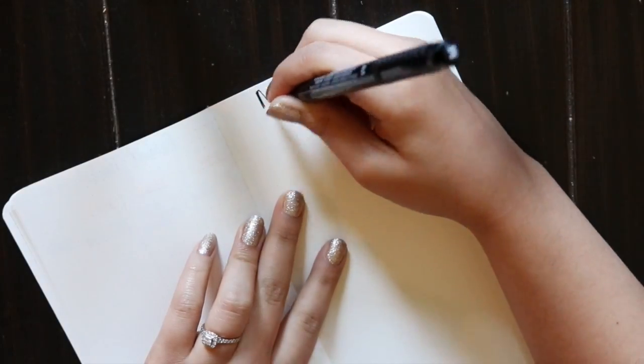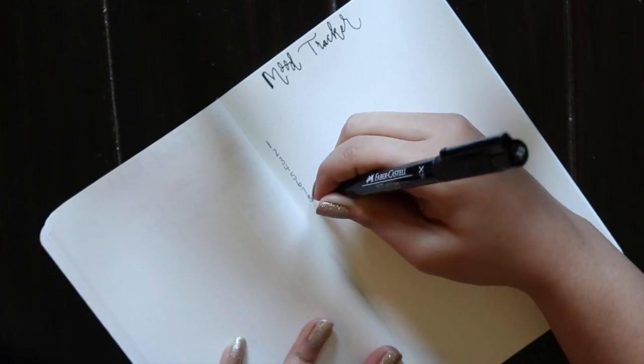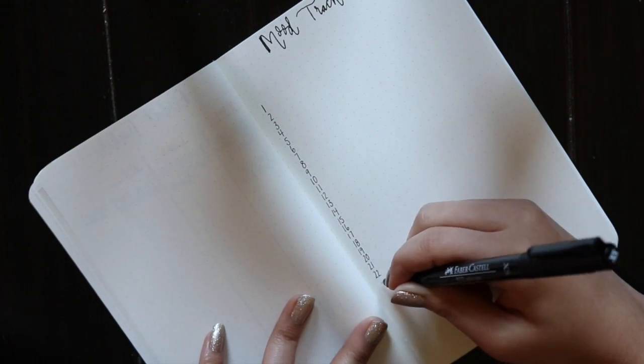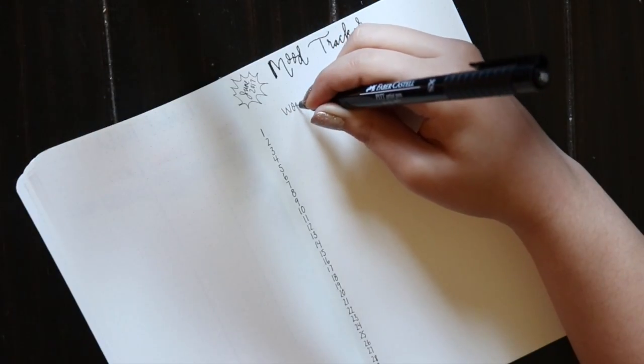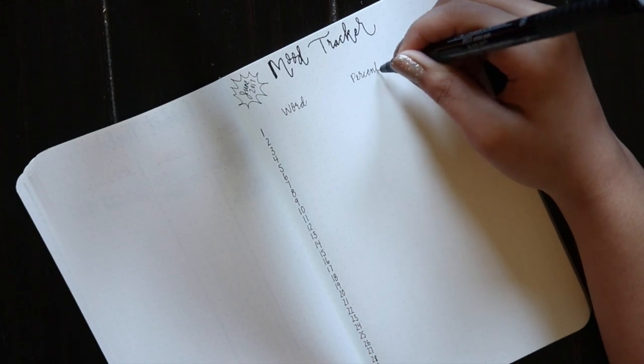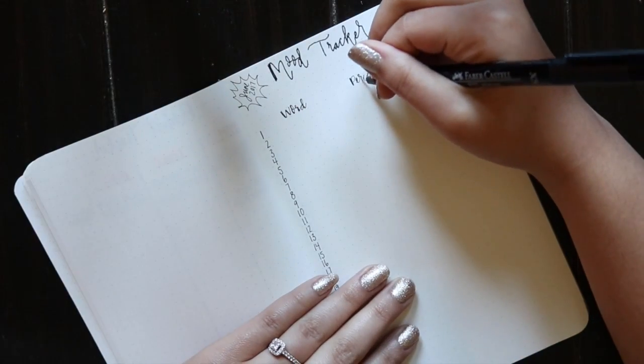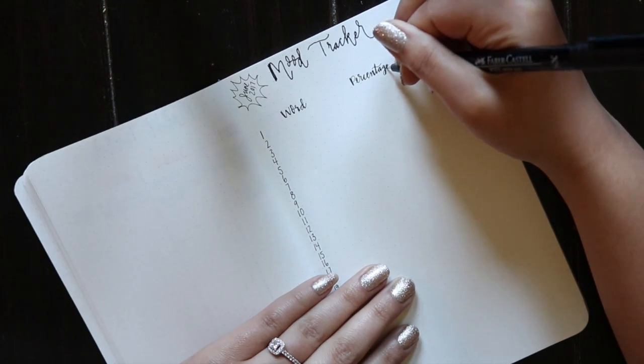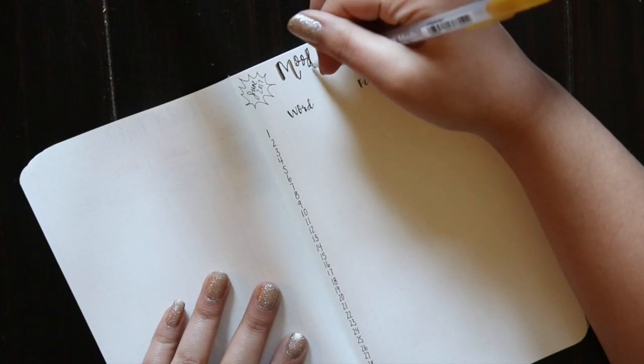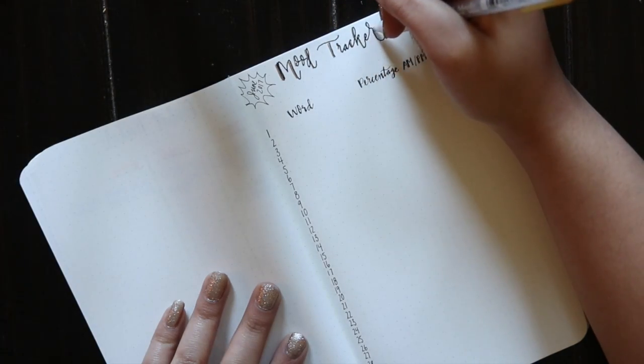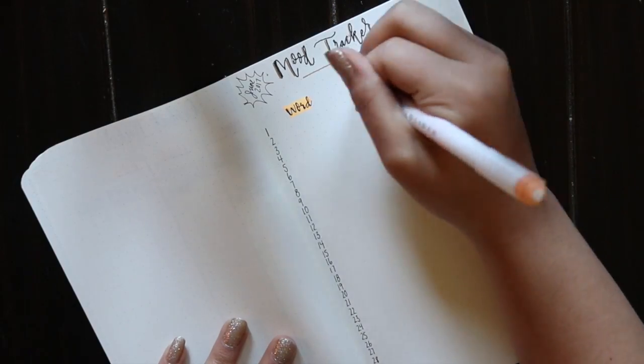The mood tracker is another favorite kind of spread for me personally. I've seen some really creative ideas for this just floating around Instagram, but I already keep a mood journal where I track a word each day to describe my mood and a percentage that I would rate my mood. I wanted to stick with that method, but there are a lot of cool variations of this spread. I just listed the days vertically down the page and I'll just go back in and fill that in each day.